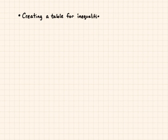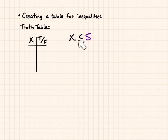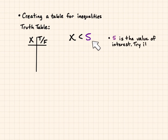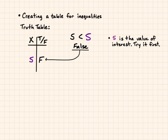Next, let's talk about creating a table for inequalities — a truth table. That's values that make an inequality statement true. So if I say x is less than 5, the value of interest that I'm going to be centered around is 5. Try it first: I'm going to put 5 as a possible value of x. Now, 5 is not less than 5, so that's going to be a false statement. I'll write it down as false under my truth table.